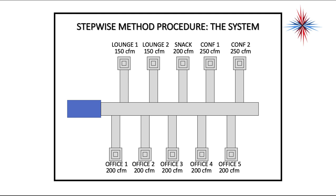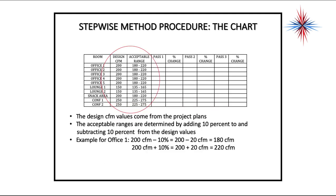Here's a sample chart. We have Lounge 1 at 150 CFM, Lounge 2 at 50 CFM, Snack Bar at 200 CFM, two Conference Rooms at 250 CFM each, and Offices at 200 CFM each — these are our desired values, and they add up to 1,400 CFM. The design values come from the project plans. The acceptable range is plus or minus 10%, so for Office 1 wanting 200 CFM, acceptable range is 180 to 220 CFM. We fill those ranges in — that doesn't require any measurements yet.